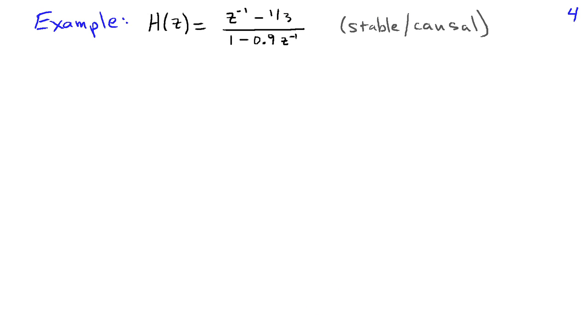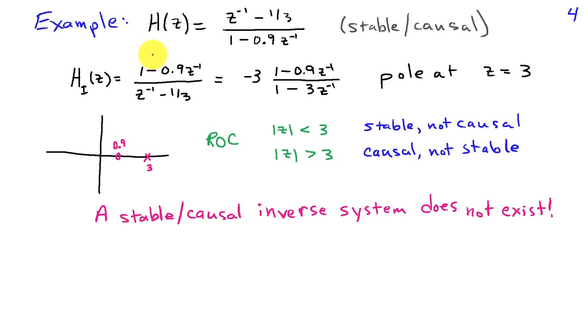Let's take another example where H of z is z inverse minus 1 third divided by 1 minus 0.9 z inverse. This system has a pole at z equals 0.9. Clearly, this system can be both stable and causal. If I take the inverse system, I'm going to have 1 over H of z. So I have 1 minus 0.9 z inverse in the numerator, and then z inverse minus 1 third in the denominator. I can rewrite that as minus 3 times 1 minus 3 z inverse in the denominator, with the numerator staying as 1 minus 0.9 z inverse. In this form, you clearly see that there's a pole at z equals 3 in the inverse system.